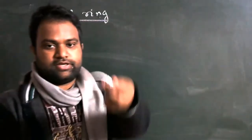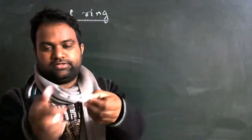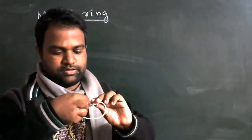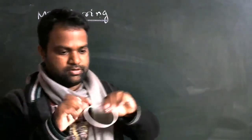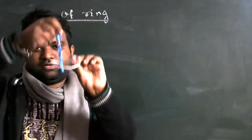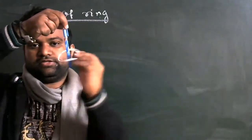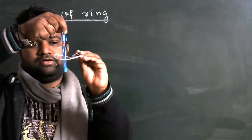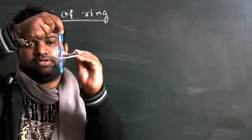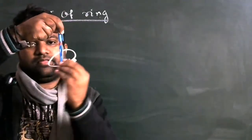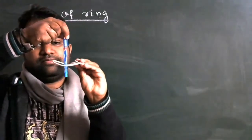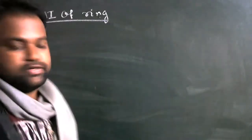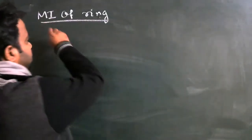Suppose this is a ring. One axis is here like this, and the ring is rotating like this. The moment of inertia of the ring which is rotating about the axis passing through its center and perpendicular to the plane — in this way the ring is rotating.